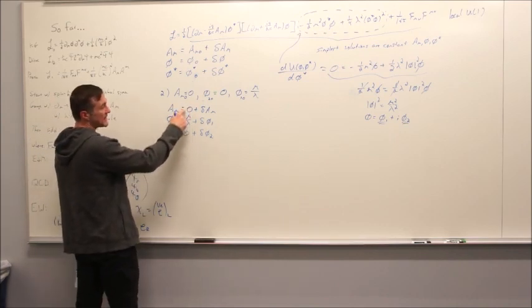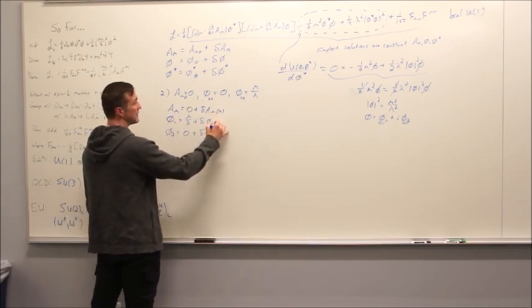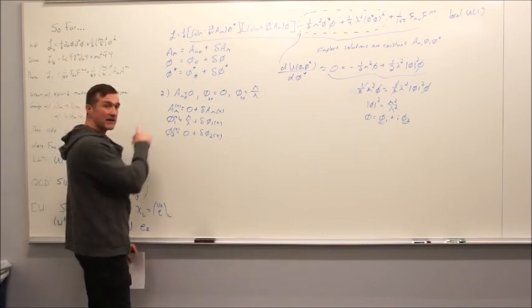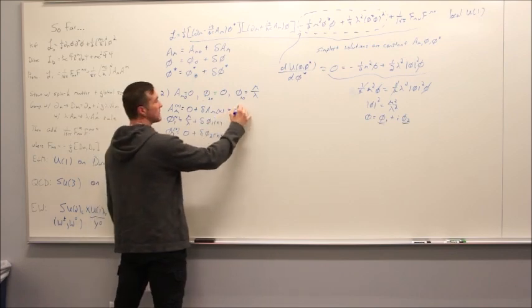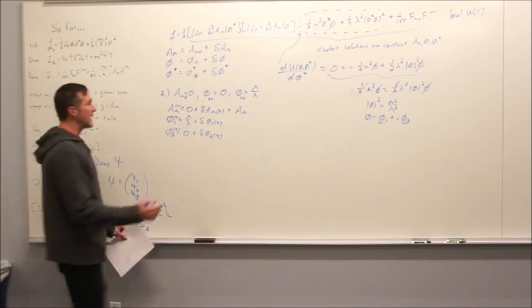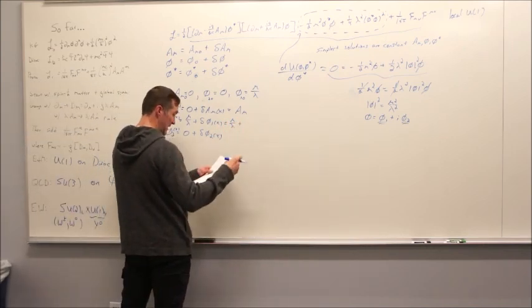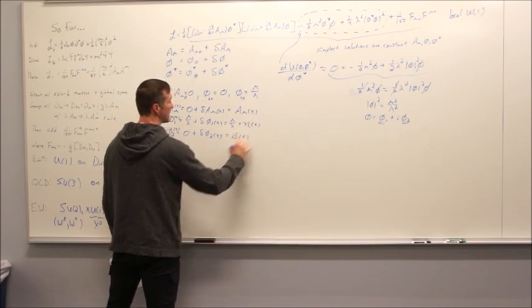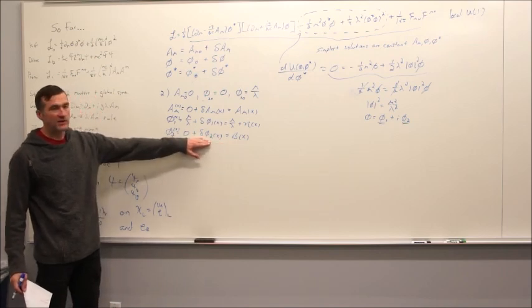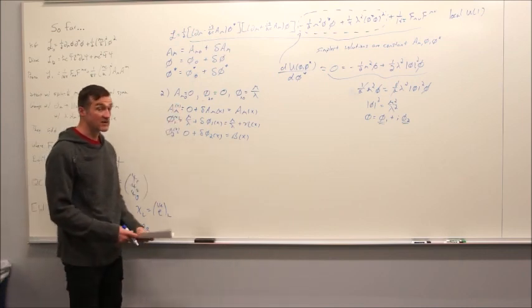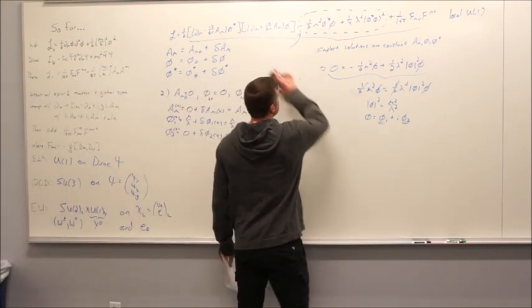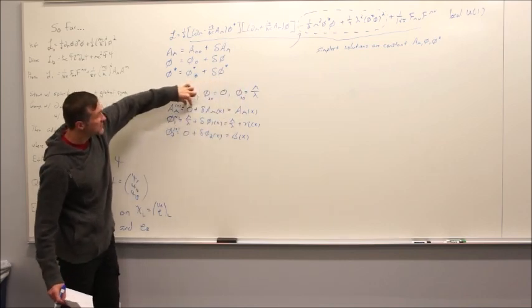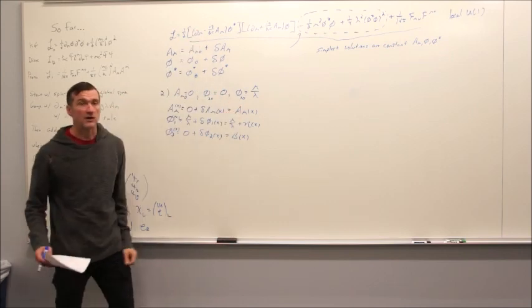The first pieces are always constants while the fluctuations depend on position. I'm going to simplify the naming: I'll call the gauge fluctuation just A_μ. Then φ₁ is μ/λ + η, where η is the fluctuation in φ₁ depending on position. And the fluctuation in φ₂ I'll call β. So whenever I write β, it's the fluctuation in φ₂, and η is the fluctuation in φ₁. Now what does our Lagrangian look like if we take these solutions plus fluctuations and cram them back into the Lagrangian?